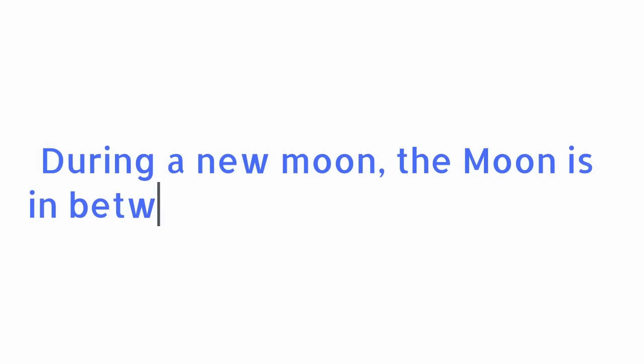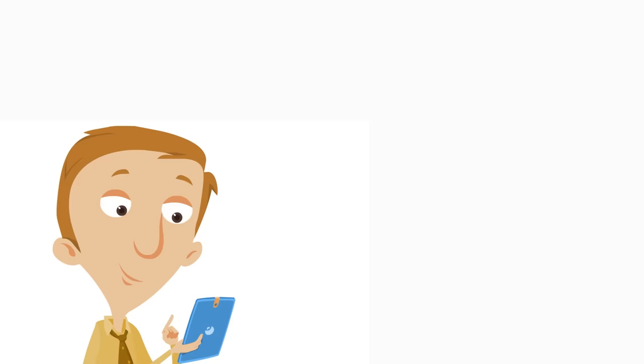So why can't we see a new moon? Well, during a new moon, the moon is in between the sun and the Earth. Because of this, it can't reflect the sun's light toward us. So during a new moon, we can't really see the moon. That's pretty interesting.